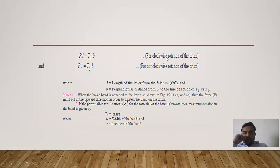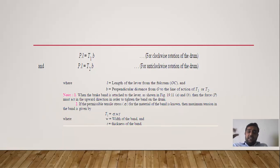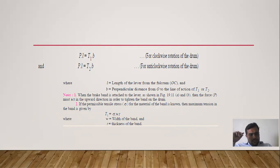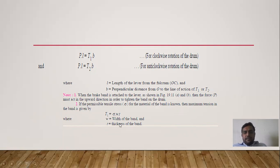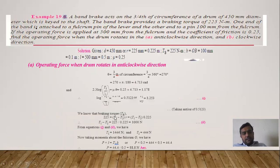To design the band, the maximum permissible tension is T1 = sigma * w * t, where sigma is the permissible stress, w is the width of the band, and t is the thickness. From this equation we can find the width w and thickness t of the band.